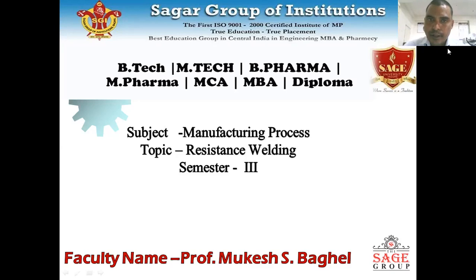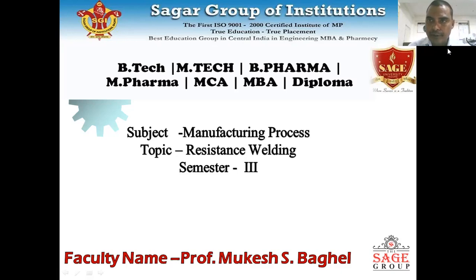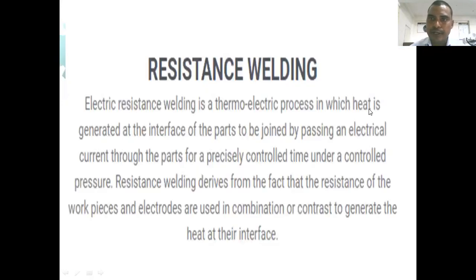As you know about welding, today we will discuss about resistance welding. We have different types of welding, one of which is known as resistance welding. In resistance welding, heat is generated by the equation H equal to I square RT. I would like to explain the definition of resistance welding.